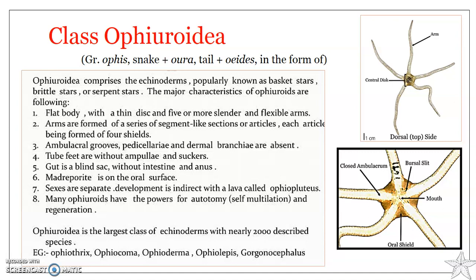They comprise the echinoderms which are popularly known as basket stars, brittle stars, or serpent stars. The term 'Ophiuroidea' comes from 'ophis' meaning snake or arm and 'stellan' meaning form. The reason is they show the serpentine movement of the arms, and they have very fragile, easily breakable arms.